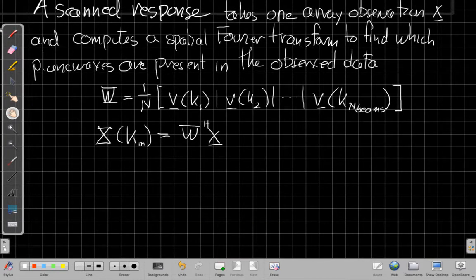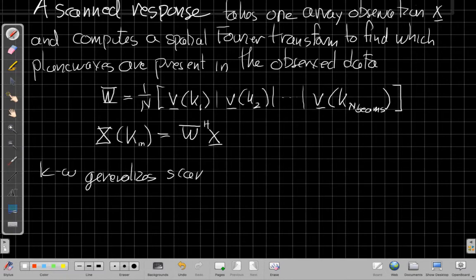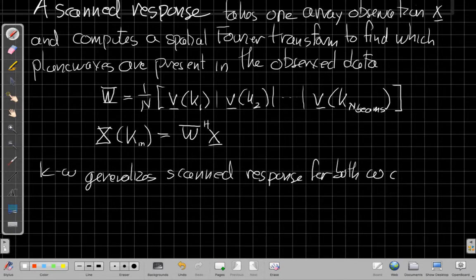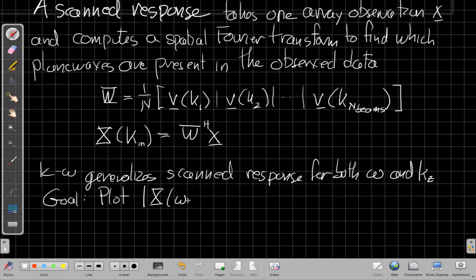What k-omega beamforming does is it generalizes this. So a k-omega plot, or k-omega beamforming, generalizes the scanned response. So essentially it is still a scanned response for both omega and, since we're using the z-axis, k sub z. And so our goal here is to plot, or to get a plot where, again, we're generally interested in the energy or the power. So we want to know for each frequency and each wave number, what's the magnitude squared, or the energy present in that plane wave. That's the goal with the k-omega beamformer.